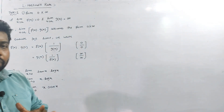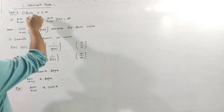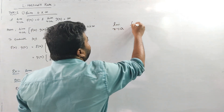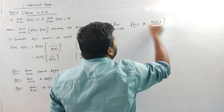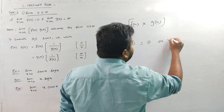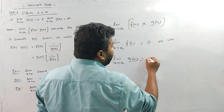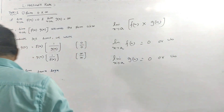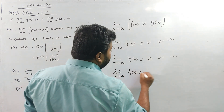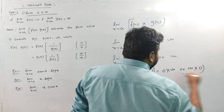In the previous video, we introduced the special case of the 0×Infinite Form. We have a question about the limit as x tends to a of f(x)·g(x), where the limit of f(x) gives 0 and the limit of g(x) gives infinity, resulting in the 0×Infinite indeterminate form. What type of approach should be used to solve this case?